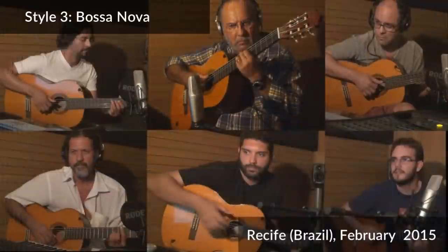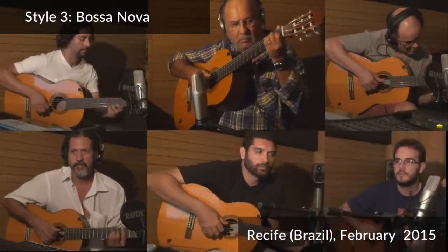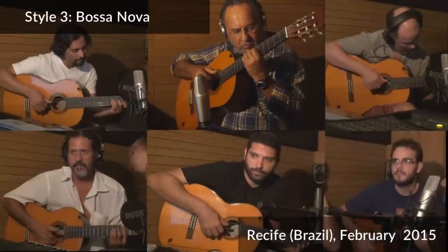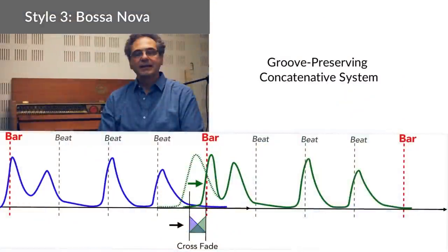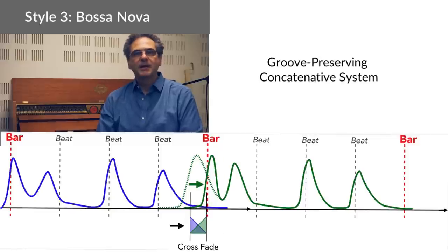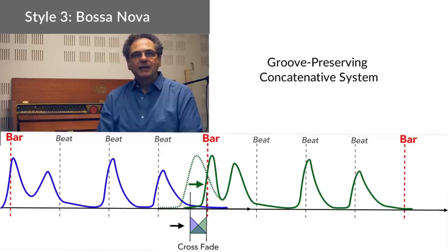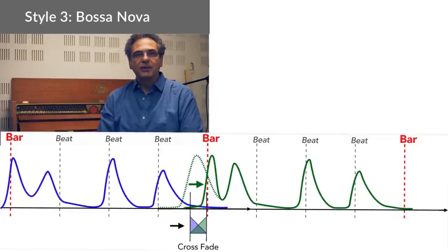For Bossa Nova, we started from a set of audio recordings done in Brazil of real Brazilian guitarists, and the challenge was to capture the subtle harmonies and the rhythm patterns which are typical of Brazilian guitar. We used an advanced concatenative synthesis engine that is able to select the right audio segments, tweak them in various ways, and glue them together, so that at the end you get an accompaniment for Ode to Joy that has exactly the same characteristics as the Bossa Nova recordings from the real guitarist.